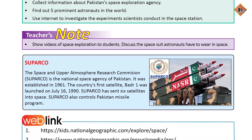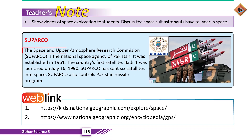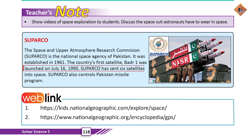Now I will tell you about SPARCO. The Space and Upper Atmosphere Research Commission is the national space agency of Pakistan. It was established in 1961. The country's first satellite, Badr-1, was launched on July 16, 1990. SPARCO currently has six satellites.